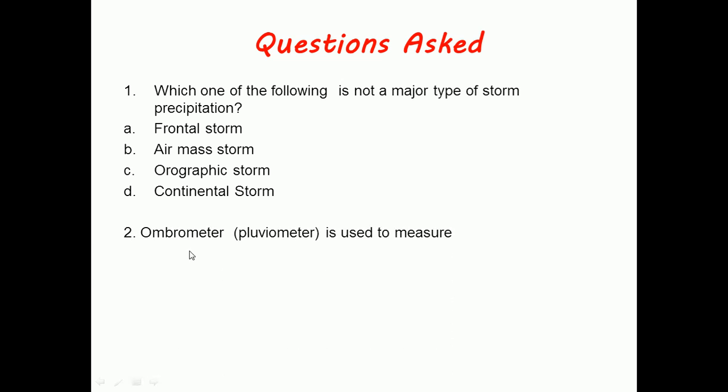The next question is: Ombrometer, pluviometer is used to measure what? Options are soil moisture stress of a plant, rainfall depth, leaf area, or root zone depth.